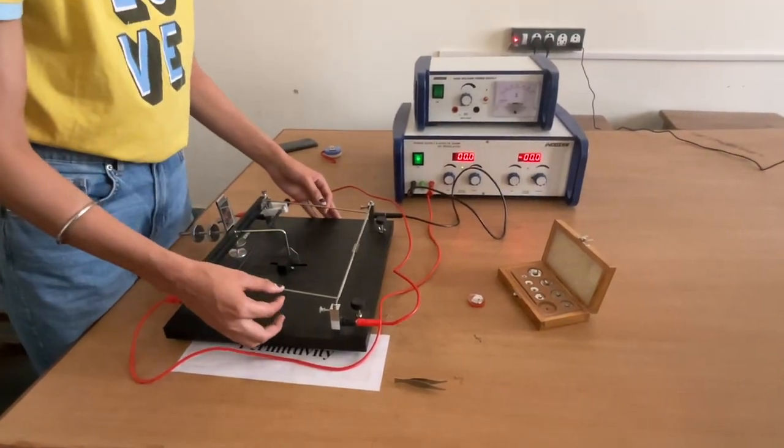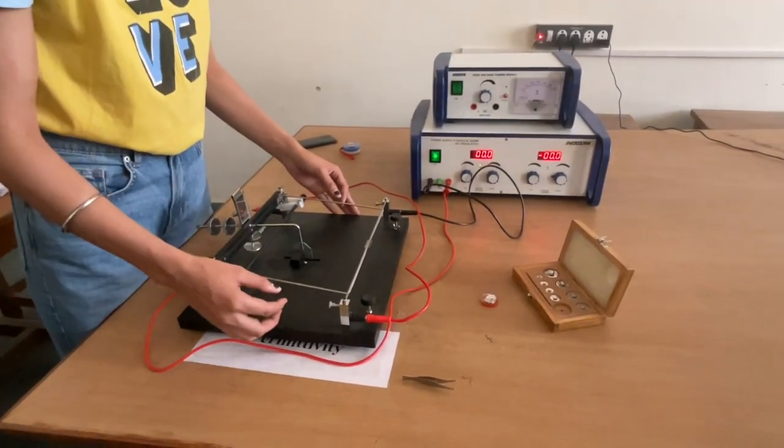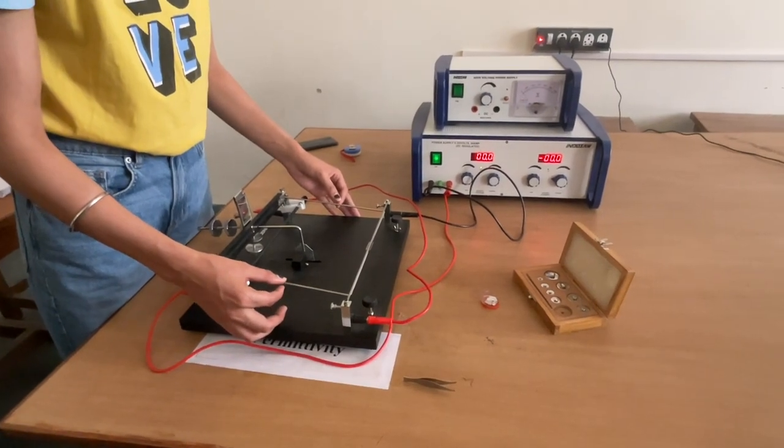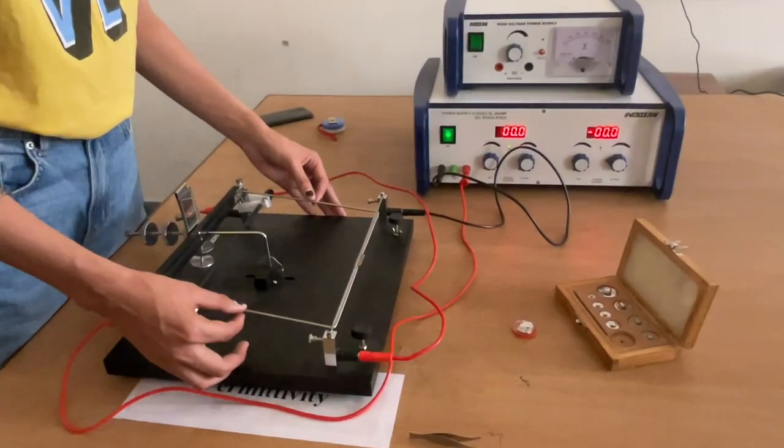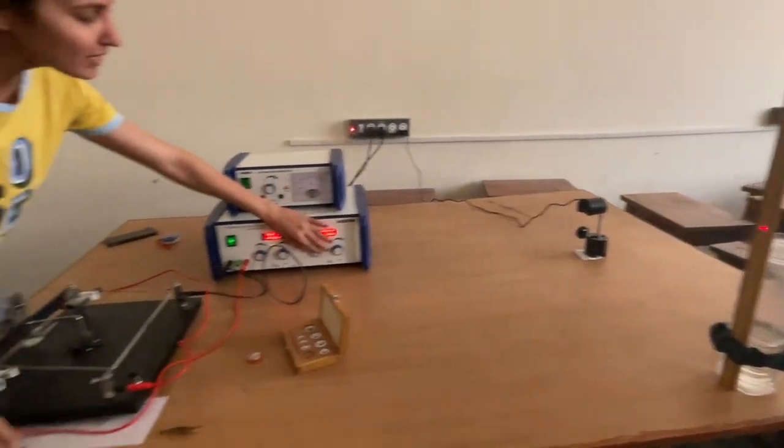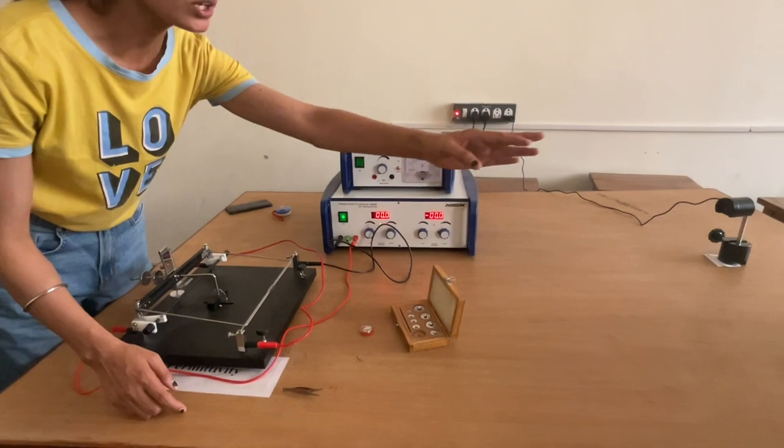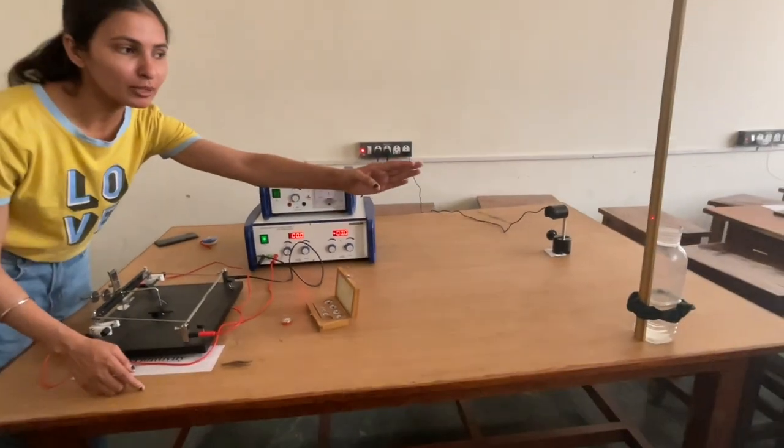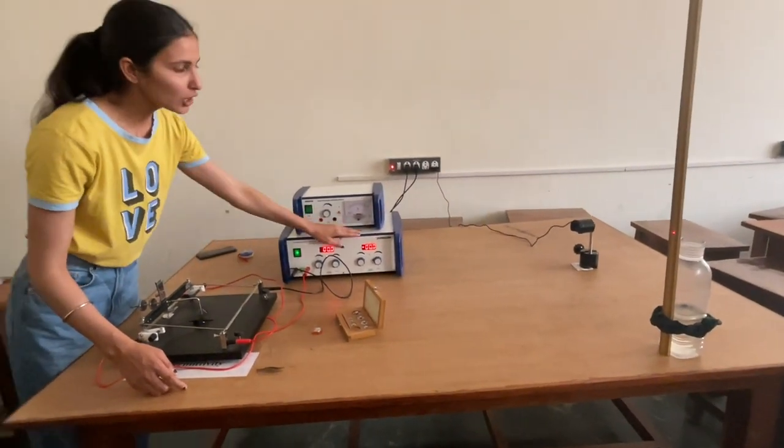Now, we will take weight from the weight box and put a certain weight on the U-shaped rod to keep it balanced. Then, the equilibrium point is disturbed and the point will shift. Then, the current will be adjusted so that the laser point will reach the equilibrium position. The current will be known as I1.